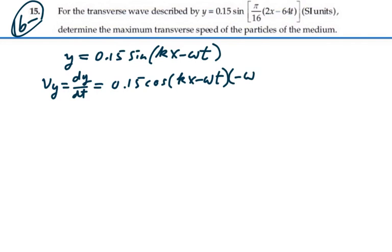we're going to have a negative omega left over from the derivative of what's inside the function with respect to t. So this is going to be 0.15 times negative 64 pi divided by 16 cosine kx minus omega t,